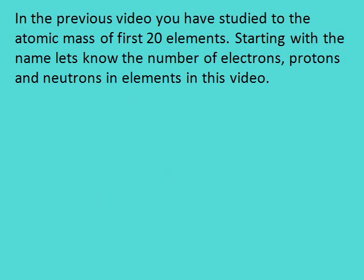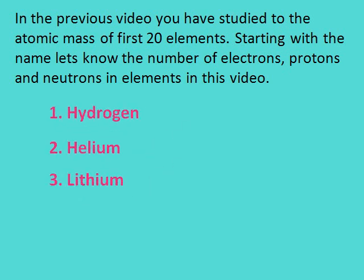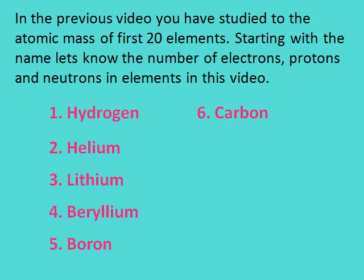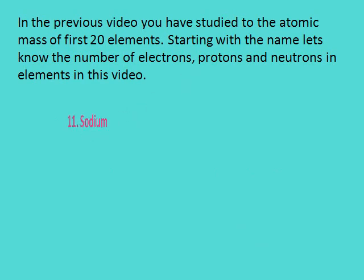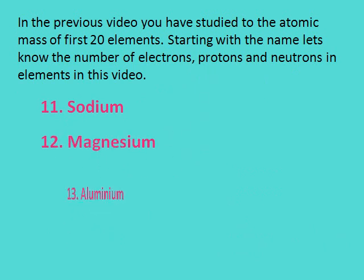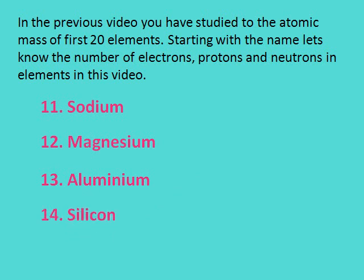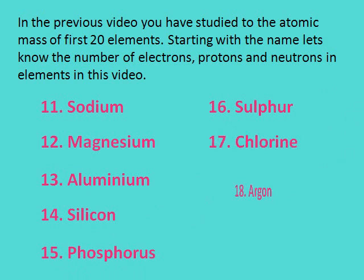Starting with the names of the first 20 elements, let's get their respective electrons, protons, and neutrons. They are: hydrogen, helium, lithium, beryllium, boron, carbon, nitrogen, oxygen, fluorine, neon, sodium, magnesium, aluminium, silicon, phosphorus, sulfur, chlorine, argon, potassium, and calcium.